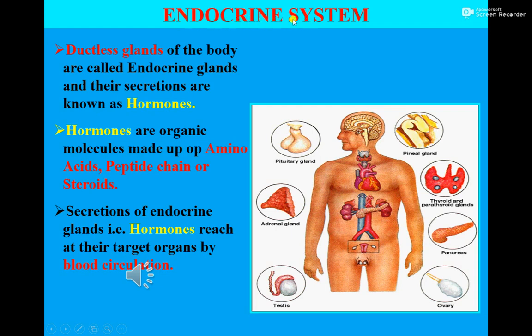What is the Endocrine System? The Endocrine System can be defined as a system that consists of ductless glands of the body. A system that consists of ductless glands of the body is called the Endocrine System, and their secretions are known as Hormones.